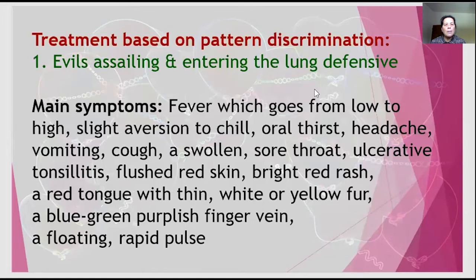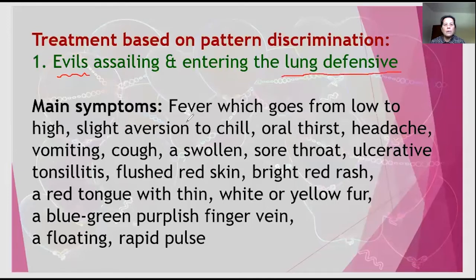Now we'll be talking about the different patterns from the TCM aspect. First, we'll be talking about pathogenic evils attacking the superficial body — attacking the defensive Wei level of the lung. The symptoms include fever, aversion to cold and chills, still belonging to exterior wind-heat pattern.